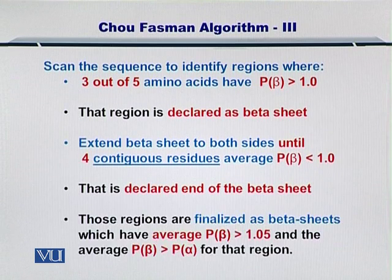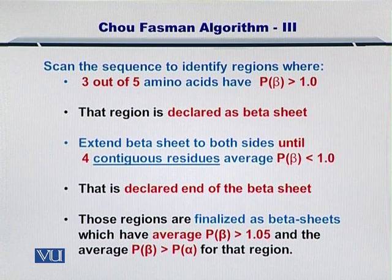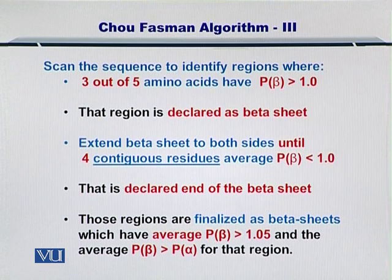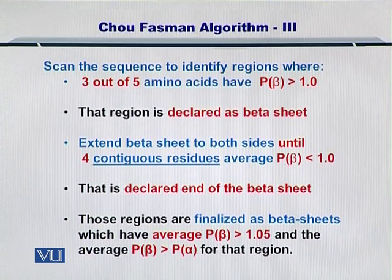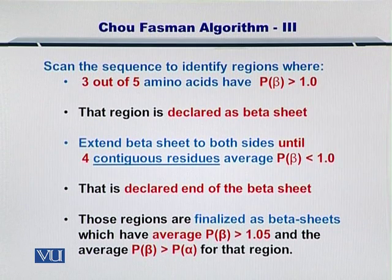The end of the beta sheet is reached, and those regions are finalized as beta sheets with an average propensity for beta sheet formation greater than 1. From those declared beta sheet regions, you calculate the average propensity for all amino acids for beta sheet formation. If the overall propensity is more than 1.05, and this propensity is greater than the propensity of those amino acids to make an alpha helix, then you finalize those regions as beta sheets. These are the two necessary conditions to finalize a beta sheet.